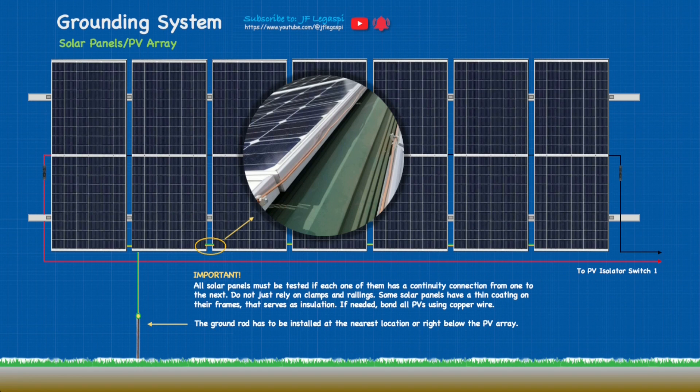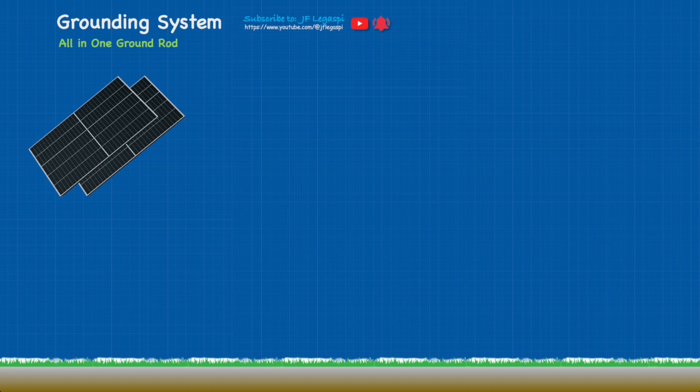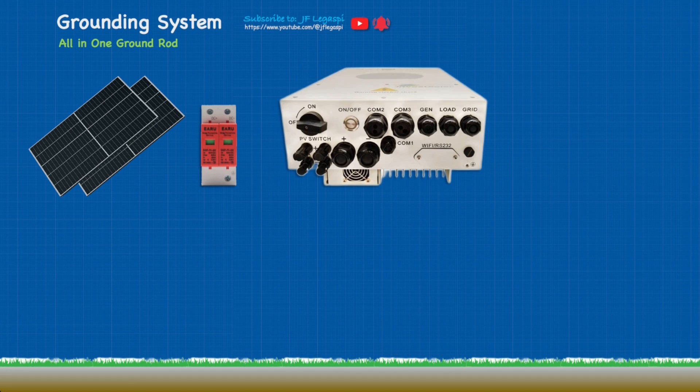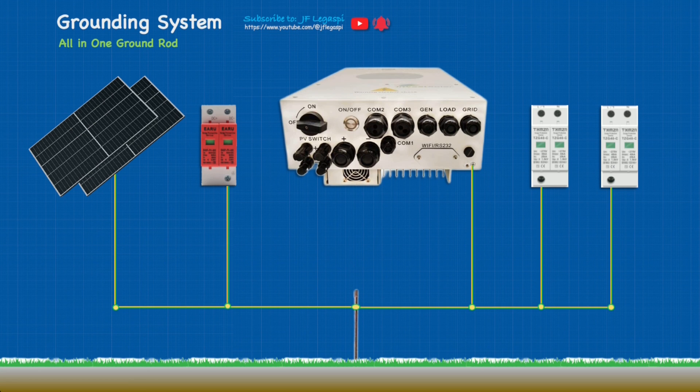The next important thing is the ground rod has to be installed at the nearest location or right below the PV array. And now let's take a look at all-in-one ground rod. Okay, we have the PV array, the DC SPD, of course we have our hybrid inverter, the AC SPD on the AC output of our hybrid inverter, and another one for the AC input of the hybrid inverter. So we can just have one ground rod and connect all of this into that.